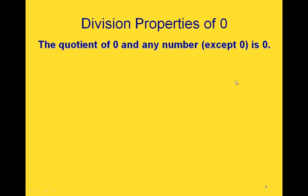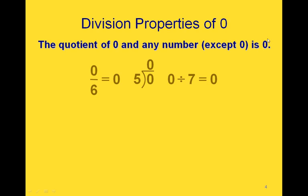Now the division properties of 0: the first one says that the quotient of 0 and any number, except for 0, is 0. So if we divide 0 by 6, we get 0. If we divide 0 by 5, we get 0. And if we divide 0 by 7, we get 0.